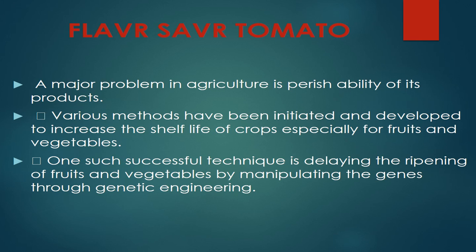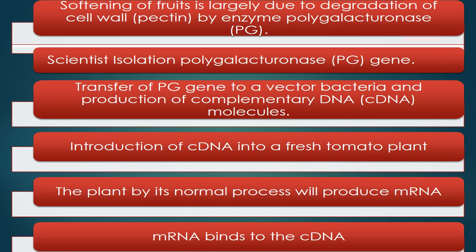The next example is Flavr Savr tomato. When we purchase tomatoes, we prefer red and firm tomatoes. However, if farmers pluck a fully ripe red tomato, by the time of transportation to the market it loses its firmness and no one will purchase it — the shelf life is short. Scientists developed a technique to prolong the shelf life of tomatoes. The outer surface of the tomato is made up of pectin, and there is a natural enzyme produced by the tomato called PG — polygalacturonase.